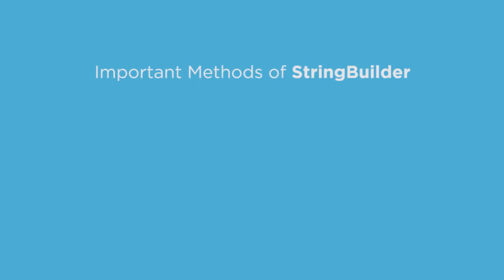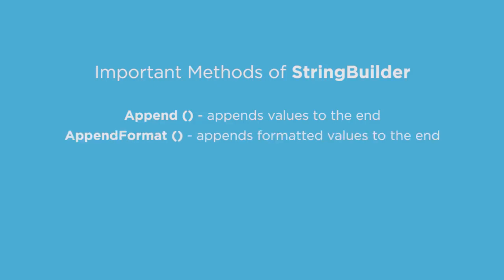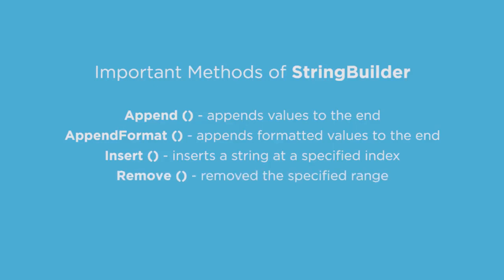In StringBuilder, we have different main methods. The first is the Append method, which simply appends values to the end of a string. Then we have AppendFormat, which appends formatted values to the end. We have the Insert method, which inserts a string at a specified index. Then Remove, which removes a specified range. And finally, Replace, which replaces characters with new ones.